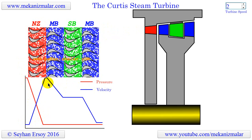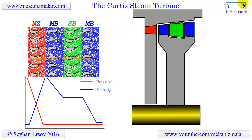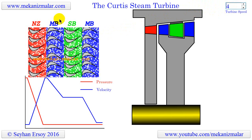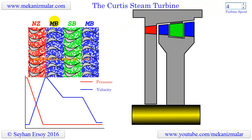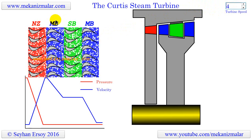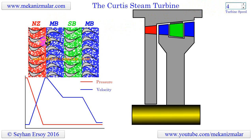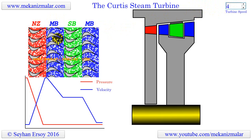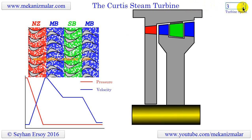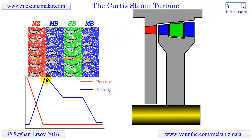The next stage, shown in blue, corresponds to the first action stage with moving blades, indicated by MB. The steam coming at high speed from the nozzles hits the moving blades and pushes them forward. During this process, the direction of the steam changes and the kinetic energy of the steam is converted to mechanical energy. As a result, the velocity of the steam is reduced in this stage, as seen in the plot.